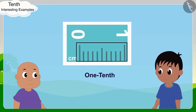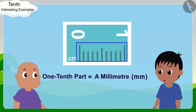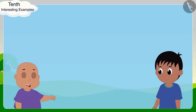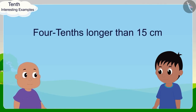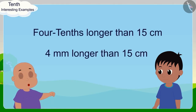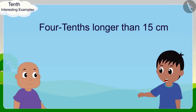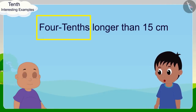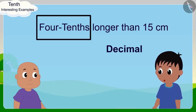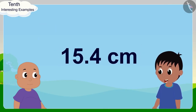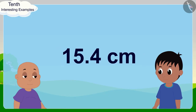Raju said: Exactly. One tenth of a centimetre is called a millimetre. And the measure of your foot is four tenths or four millimetres longer than 15 centimetres. Babalu said excitedly: Yes! And do you know, since we can also write a tenth using decimal, we can say that the measurement of my foot is 15.4 centimetres. Raju told Babalu. Now, Babalu measured his foot.